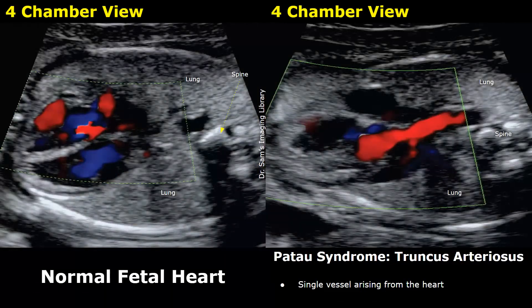Cardiac anomalies are also present in a fetus with Patau syndrome. Truncus arteriosus and ventricular septal defect are often present. In truncus arteriosus, a single vessel will be seen arising from the heart on ultrasound, along with a ventricular septal defect. So if only one single vessel is seen leaving the heart, it strongly indicates truncus arteriosus.